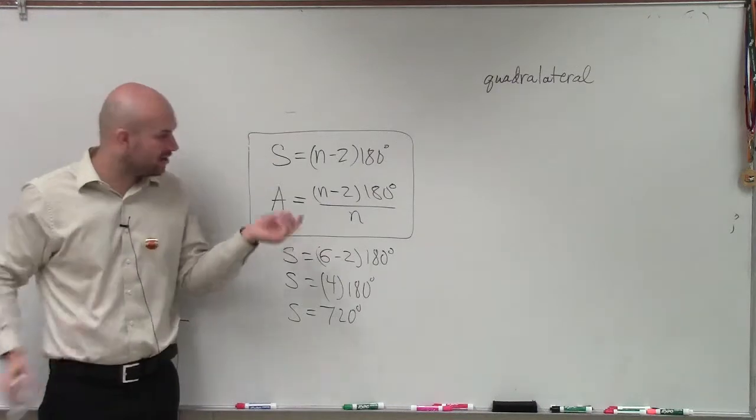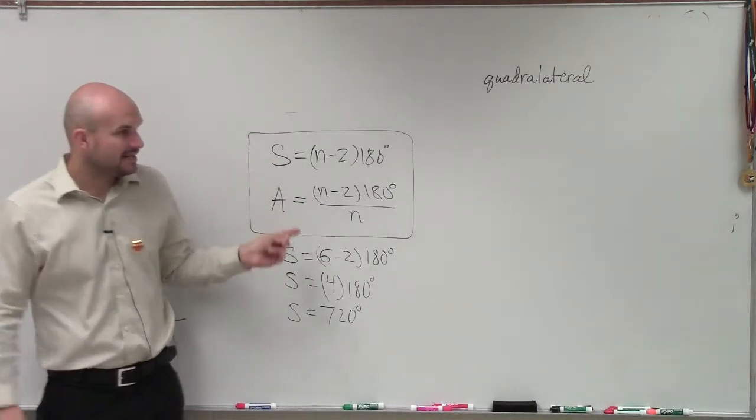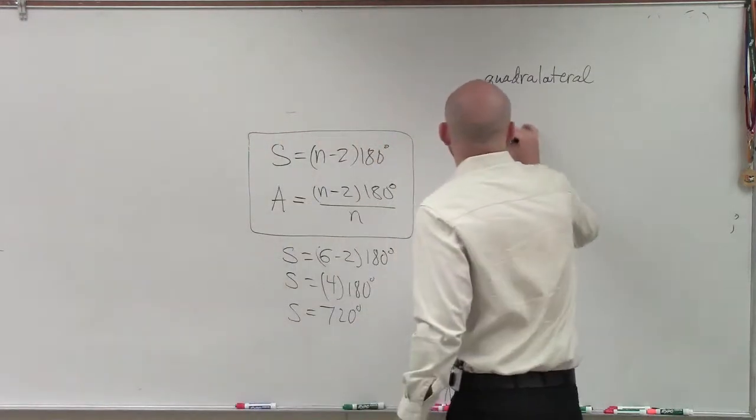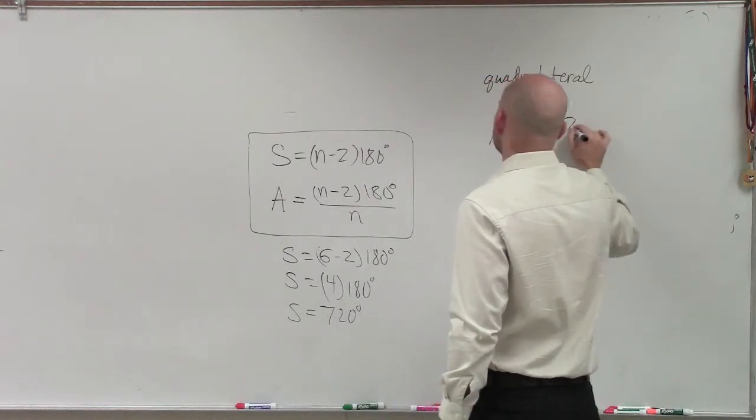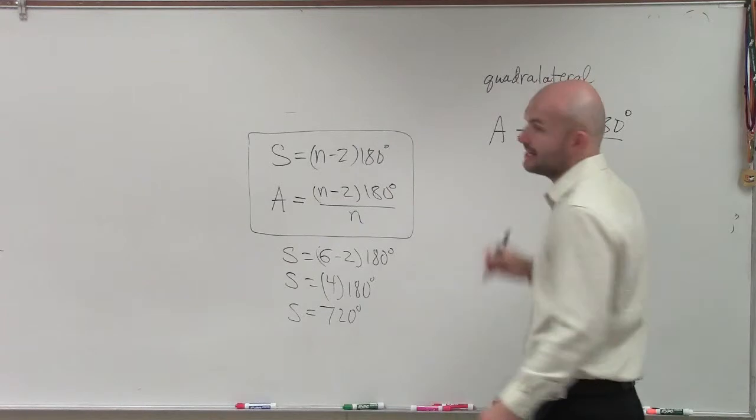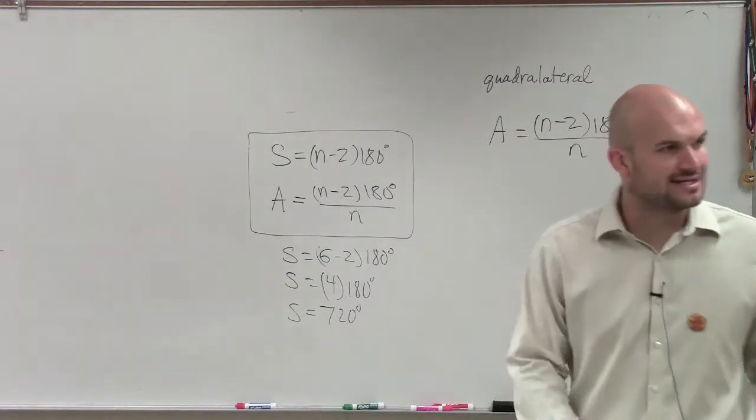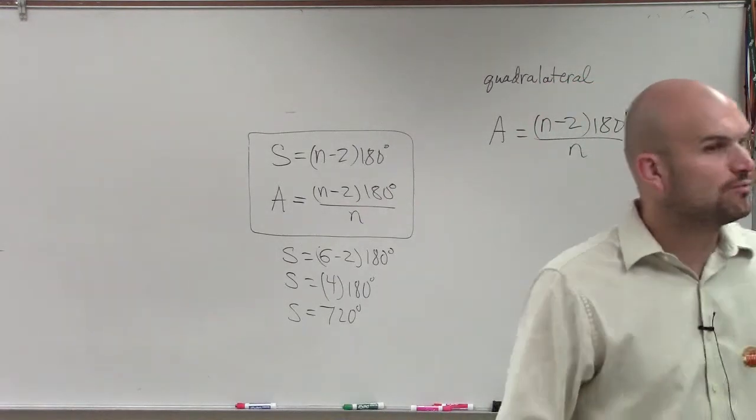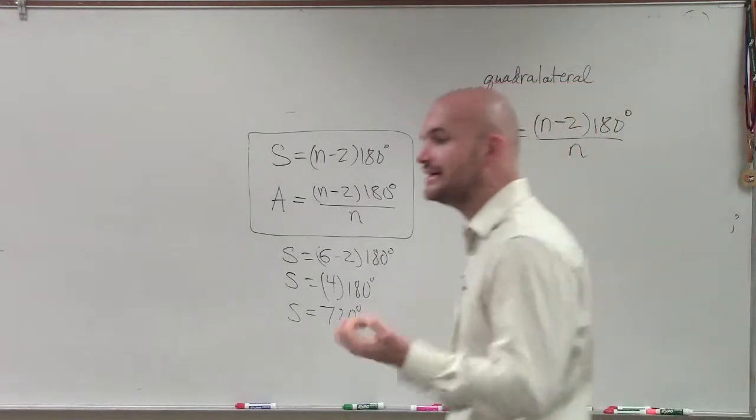The measure of an interior angle of a regular polygon, the measure of one angle equals n minus 2 times 180 degrees divided by n. That's the formula I want you guys to see, because that's going to tell us what is the measure of each individual angle.